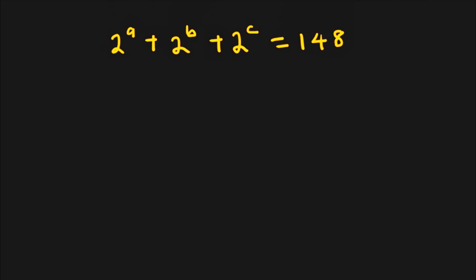Hello and welcome. Let us look at this nice question. We have 2 raised to the power of a plus 2 raised to the power of b plus 2 raised to the power of c is equal to 148. And we are required to look for the values of a, b and c.